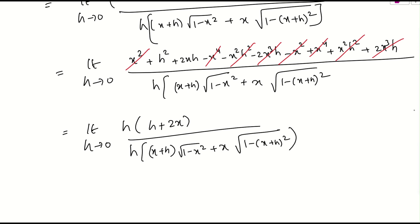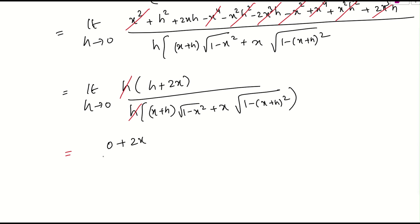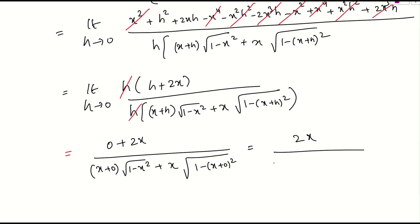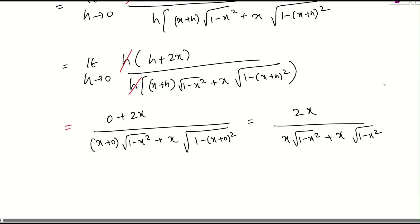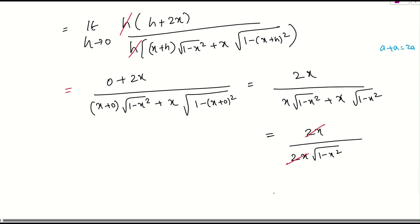We can cancel h from numerator and denominator. Then substituting h equals 0 gives: 2x divided by x plus 0 into root of 1 minus x square plus x into root of 1 minus x plus 0 whole square. This simplifies to 2x divided by x root of 1 minus x square plus x root of 1 minus x square, which is 2x divided by 2x root of 1 minus x square.